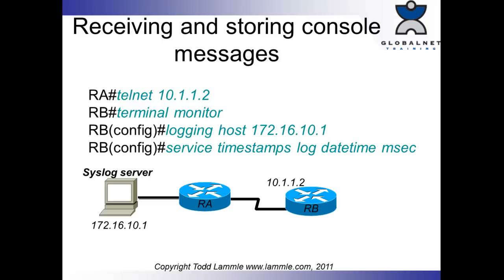What we can do is log console messages — say we're doing a debug on a router for a complicated problem. We would use the 'logging host' command from global config with the IP address of the syslog server. Now, if I wanted to make sure I knew the timing of various events while debugging a complicated router issue, I would use 'service timestamps log daytime msec'. The 'daytime msec' is not a variable — it's saying log the daytime and milliseconds of these messages. You'd need to make sure your router time and date are set correctly, or use an NTP server on your network.